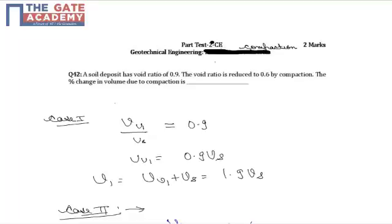In this question it is given that a soil deposit has initial void ratio of 0.9 and by compaction it was reduced to 0.6. So it is asked what is the percent change in volume due to compaction.